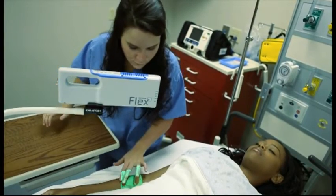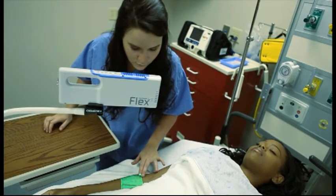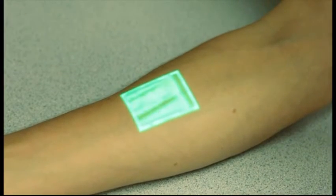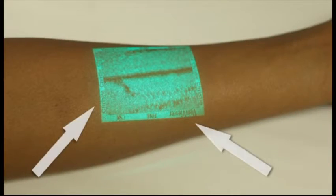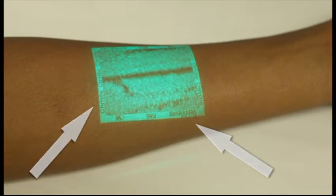To achieve proper focal distance for VainViewer Flex, hold the unit close to the surface of the skin and move the unit away until the border text around the image reading VainViewer and Christie becomes clear and legible.